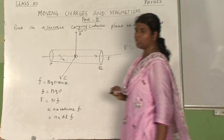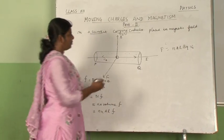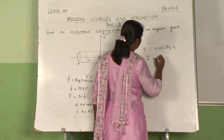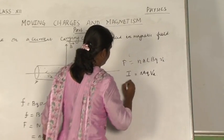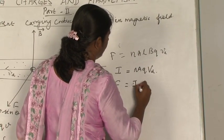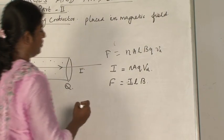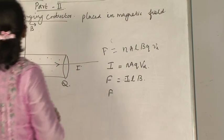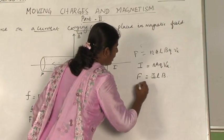This V is your drift velocity — we will write that as V subscript D. You know already I is equal to N·A·Q·Vd. So substituting, you will get F equal to I·L into B.